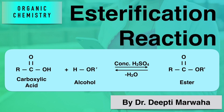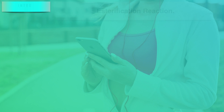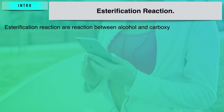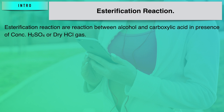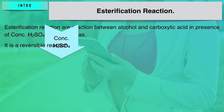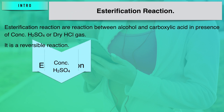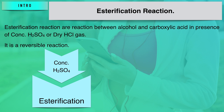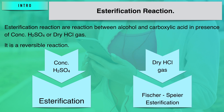Hello all, let us see esterification today. Esterification is basically a process whereby alcohols react with carboxylic acids in presence of a few drops of either concentrated sulfuric acid or dry HCl gas. This reaction is a very slow reaction since it is a reversible reaction. There are two versions of esterification: if we use concentrated sulfuric acid, it is called normal esterification, and if we use dry HCl gas, it is called Fischer's esterification.